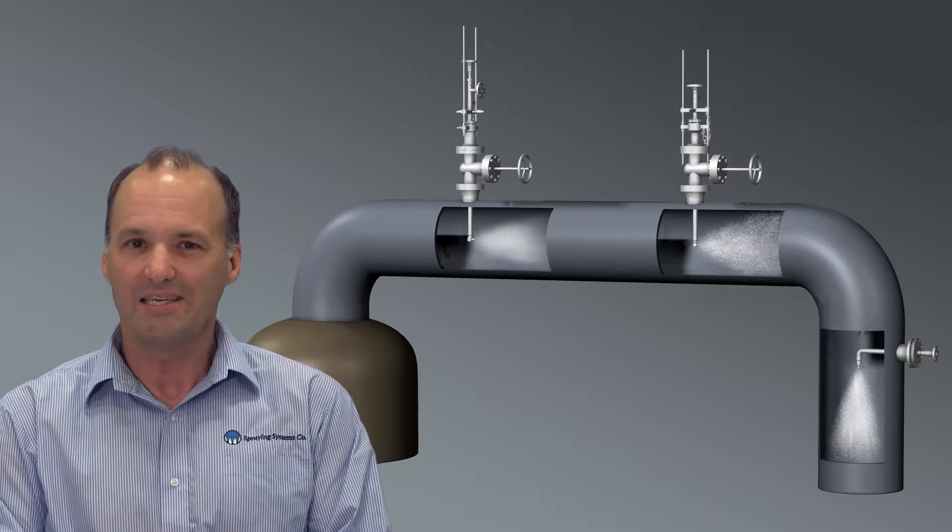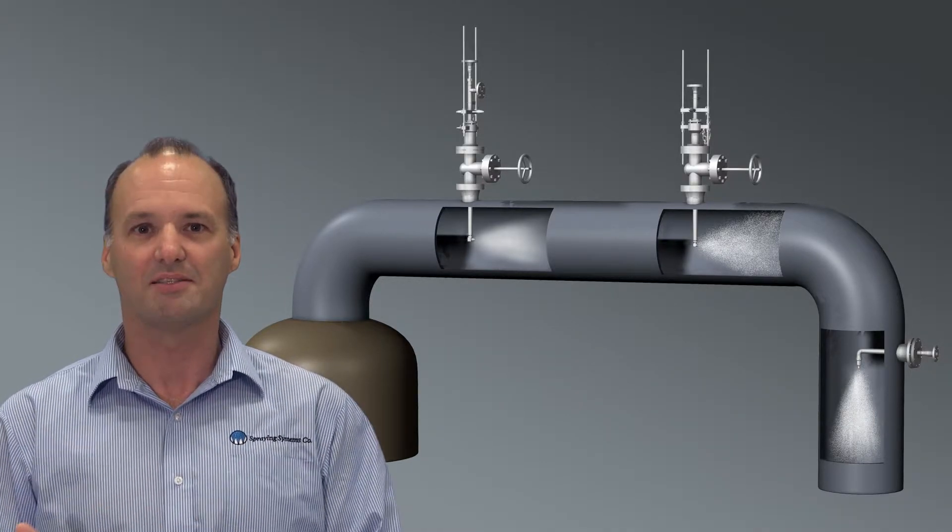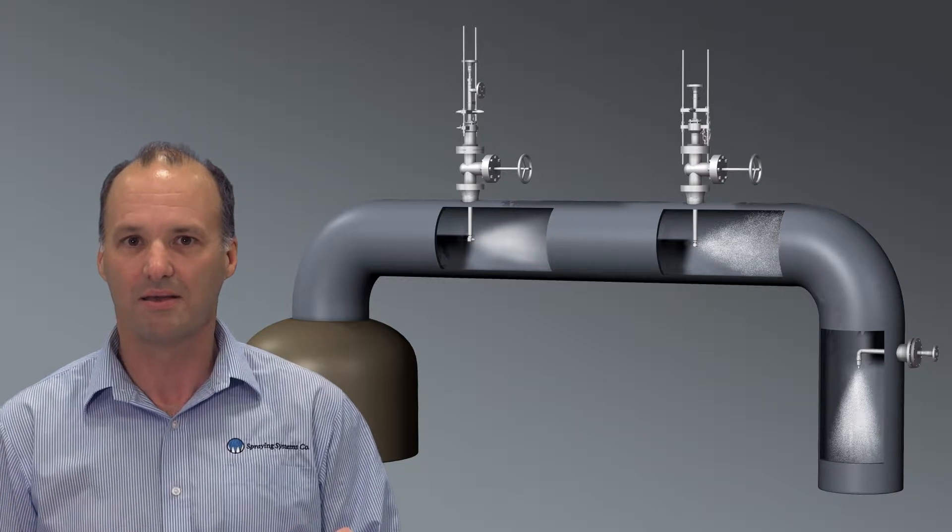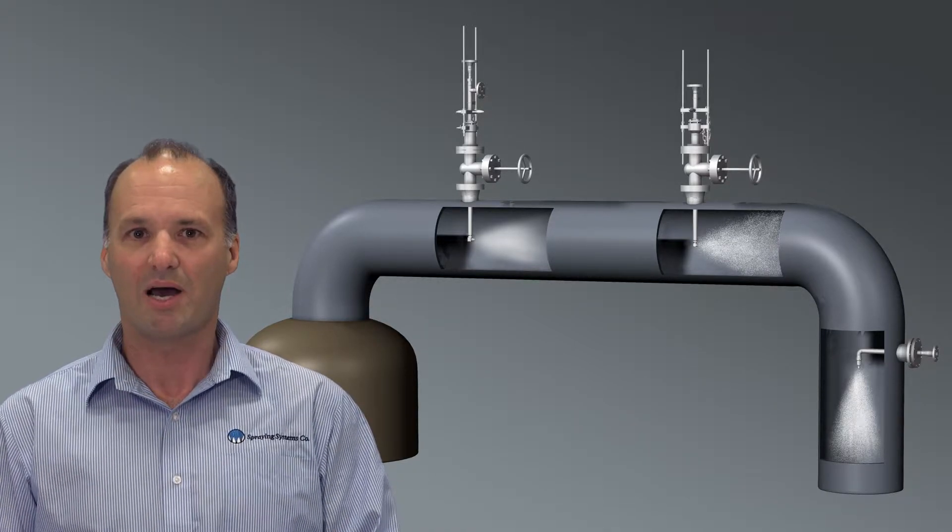Right now, you're relying on the heat transfer from the steam and the overhead line itself to volatilize the amine. But what if that doesn't happen as efficiently as you think it does? What problems can occur?